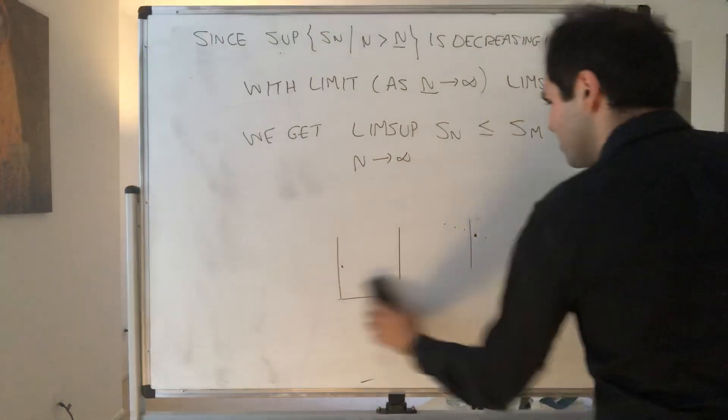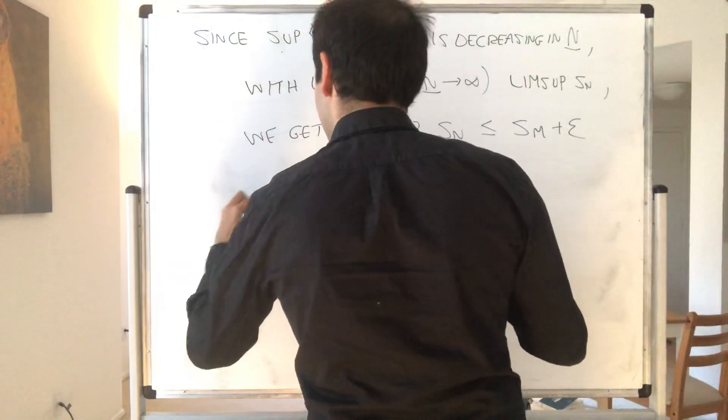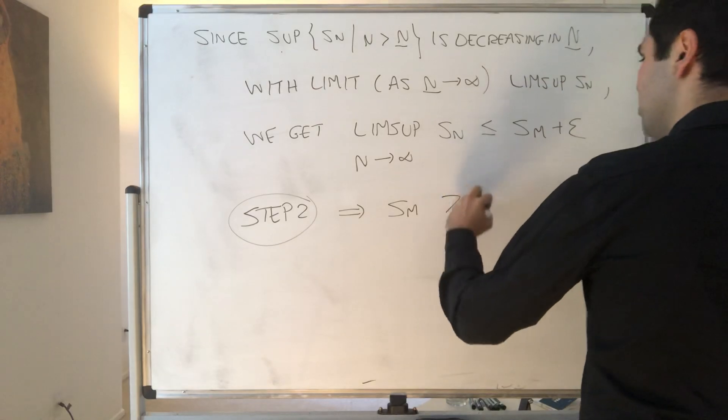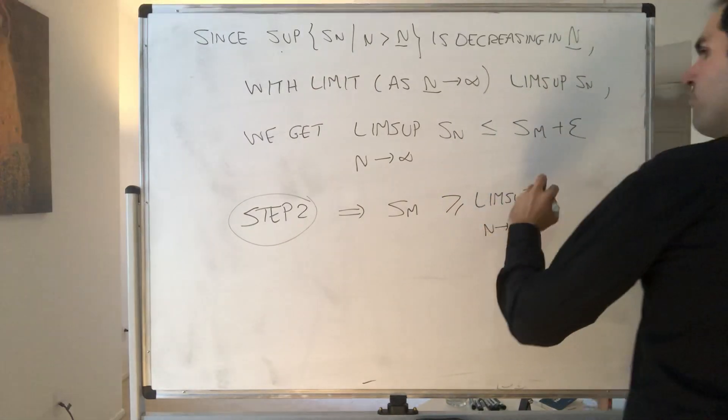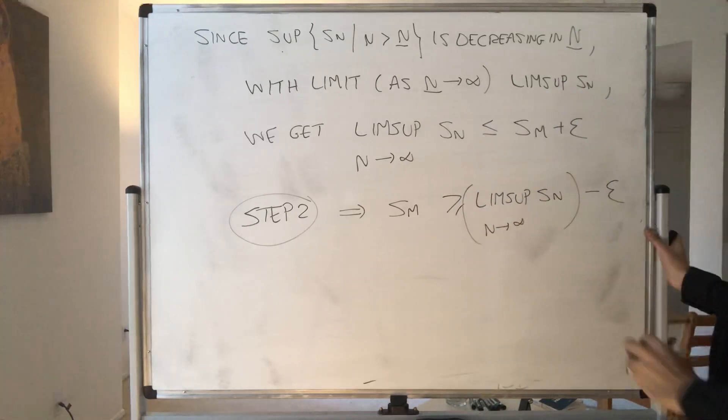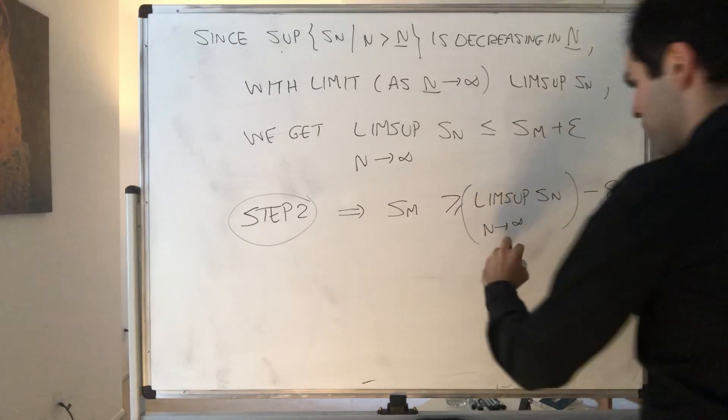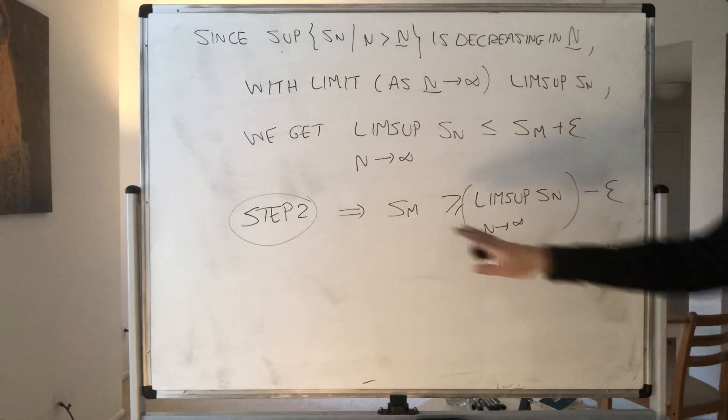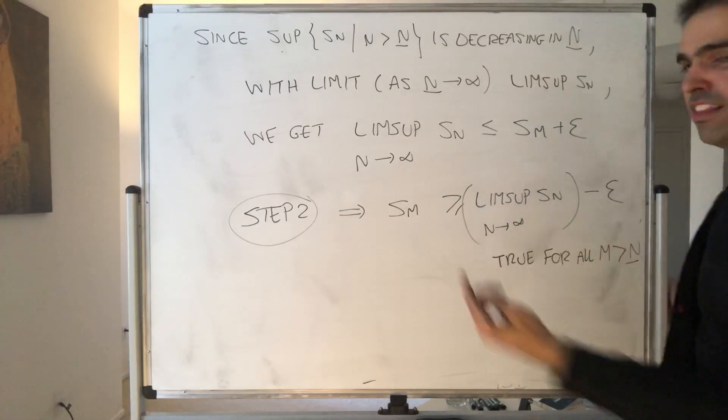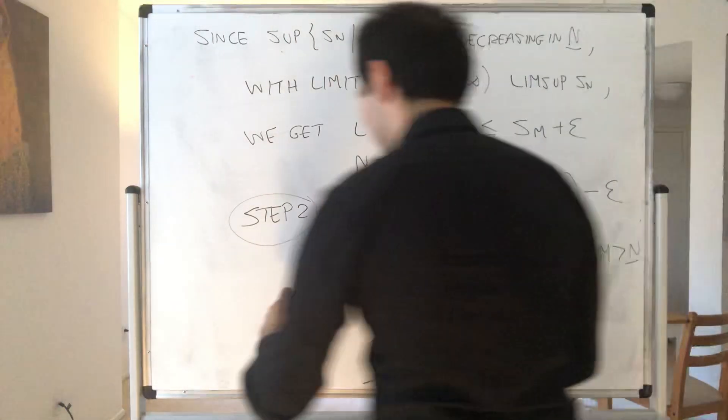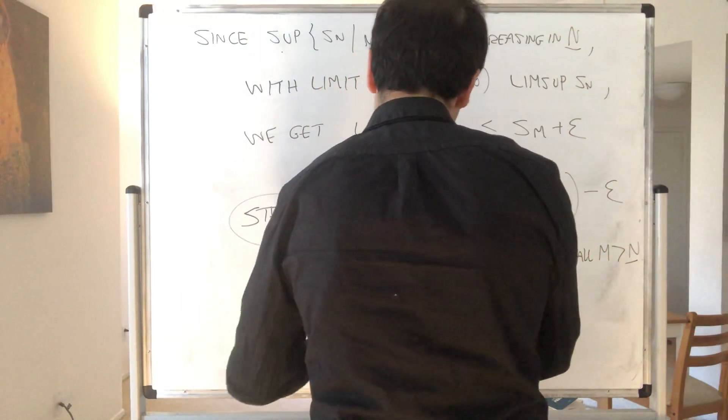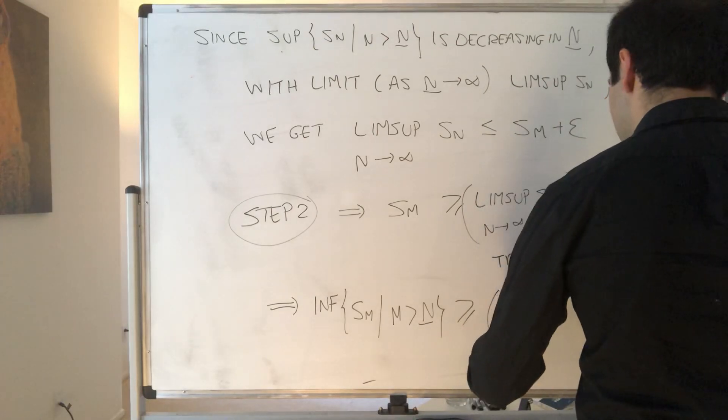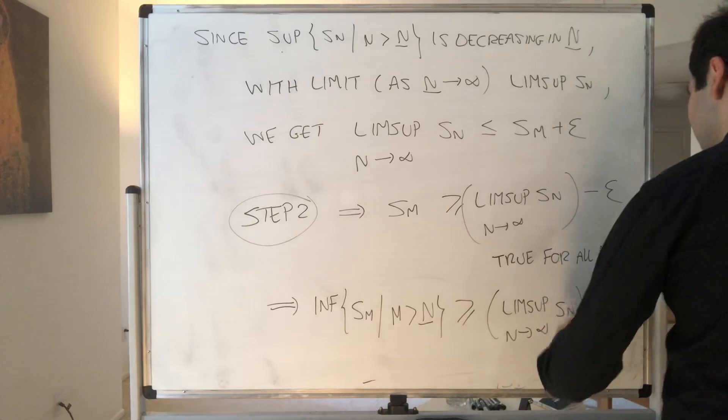So that's already one thing. And then for our next magic trick, we can solve for Sm. So this implies Sm is greater than or equal to the lim sup of Sn minus ε. But again, this is true for every M bigger than capital N. So now, just take the infimum. If all the values are bigger than 10, the minimum is also bigger than 10. So in particular, the infimum of Sm, where M is bigger than capital N, is greater or equal to the lim sup as N goes to infinity of Sn, minus ε.